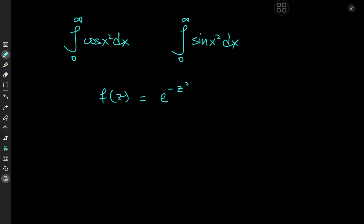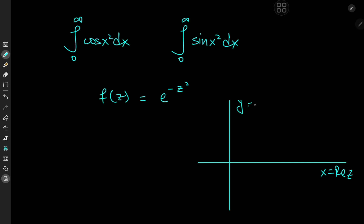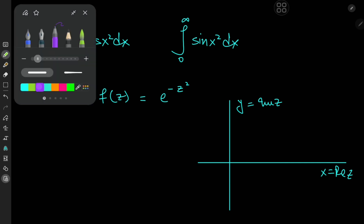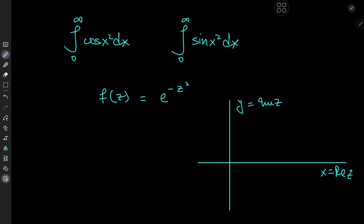What contour are we planning to use? Let me present the complex plane: the real axis here and the imaginary axis here, where x equals Re(z) and y equals Im(z). The contour we're going to use is a pizza slice contour — a sector of a circle of radius r. We have one radial line from the origin, another radial line, and the arc part of the sector. The measure of this sector is π/4 radians. I'll call the entire contour C, and we traverse it in the counterclockwise sense.